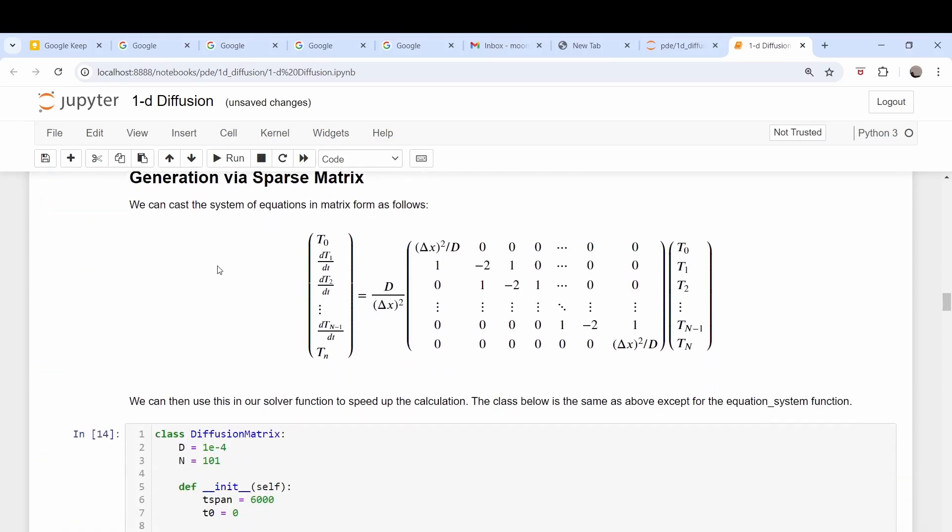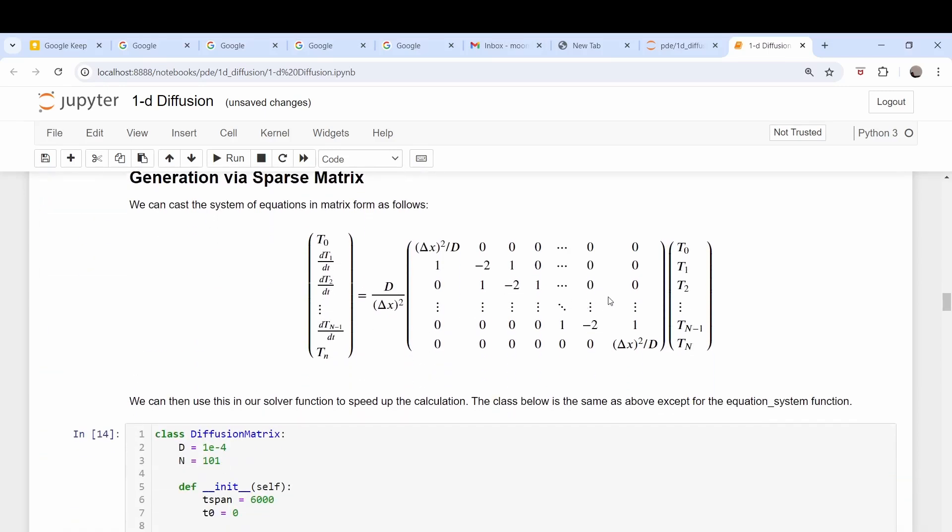Then we moved on to a slightly more realistic formula. So what we did instead of doing a loop, which is slow in Python, is we used NumPy's sparse matrix library. So we wrote our system of equations here in this matrix form, and you can see that we have zeros - most of the entries in this matrix are zeros except for the main diagonal and the two diagonals above and below it.